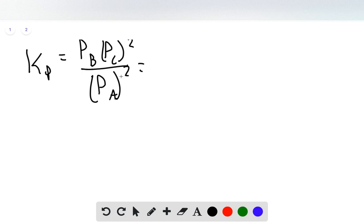And so the partial pressure of B is equal to that X we just found, 0.1118. The partial pressure of C is 2 times that value squared.